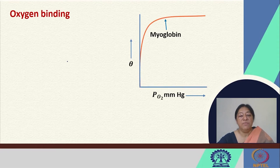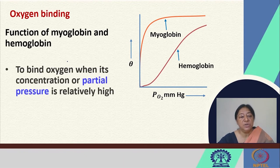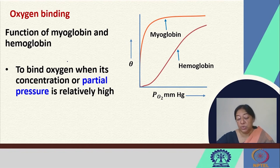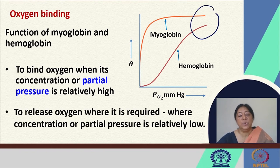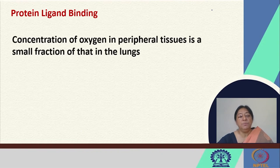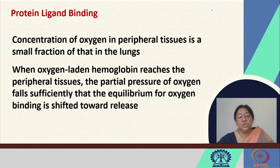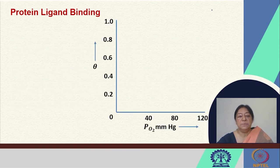When we look at oxygen binding characteristics, myoglobin shows a hyperbolic curve and hemoglobin shows a sigmoidal curve. Both proteins bind oxygen efficiently when its concentration or partial pressure is high. But to release oxygen where it is required, the partial pressure is relatively low, and hemoglobin will release oxygen at a lower concentration of oxygen levels. The concentration of oxygen in peripheral tissues is a small fraction of that in the lungs, so when oxygen-laden hemoglobin reaches the peripheral tissues, the drop in partial pressure shifts the binding equilibrium towards release of oxygen.